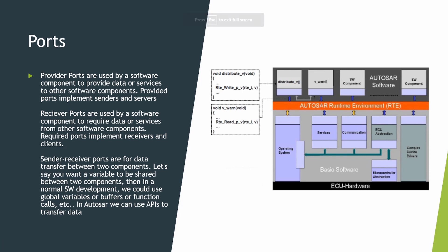Implementation of the VFB port concept is done by RTE structures, and the connections between them are implemented by RTE APIs. For example, consider these two components: DistributeV and V1. DistributeV sends data out via RTE_Write, and V1 receives the data via RTE_Read. These two components are connected by ports — DistributeV will have a provider port and V1 will have a receiver port. The connection is made with tools, and when the code is generated, these RTE functions get created and can be used inside our software components.